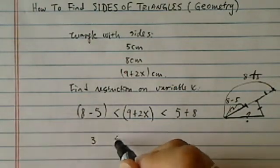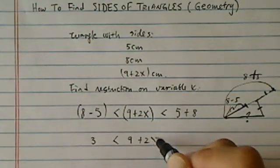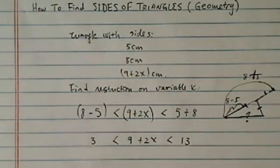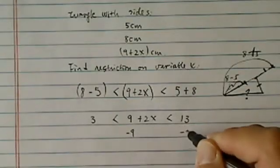All right, from here it's really easy to solve, basically an inequality. Okay, so I'm going to subtract 9 everywhere.